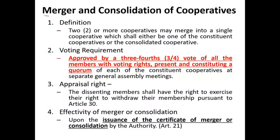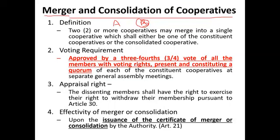Now let us proceed to merger and consolidation. You are already familiar with these from corporation law. For example, cooperative A and cooperative B — if B disappears and A survives, we call it merger. But if both A and B disappear because they create a consolidated cooperative, we call it consolidation.